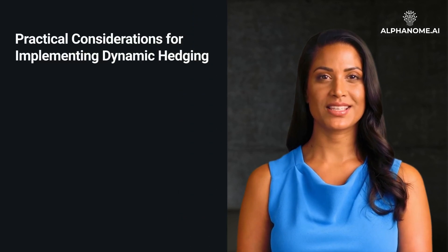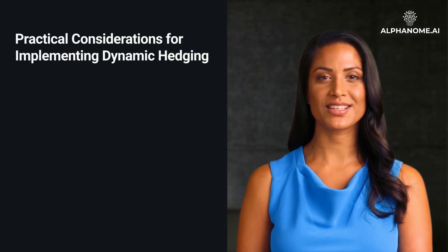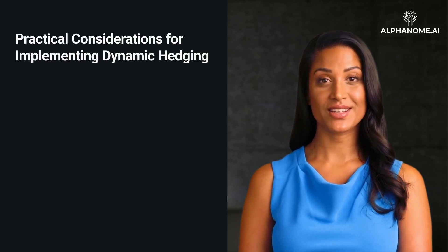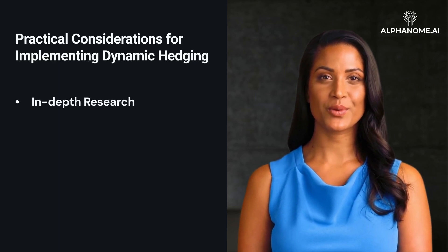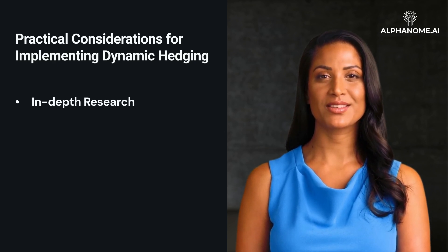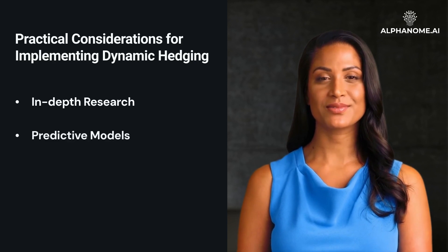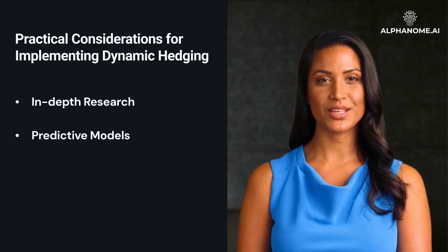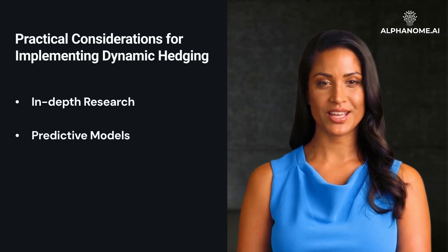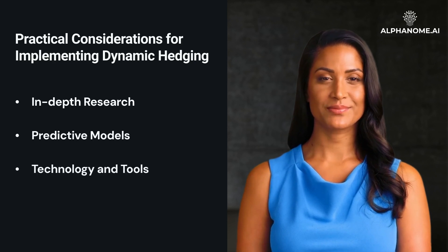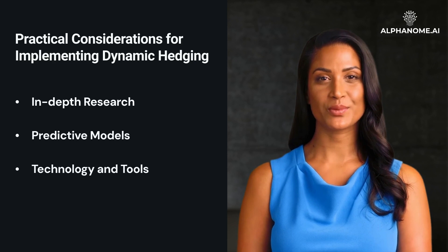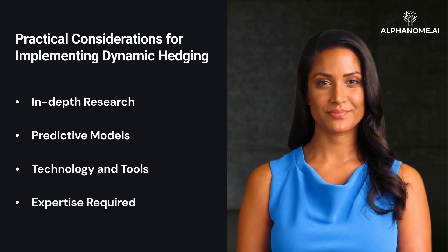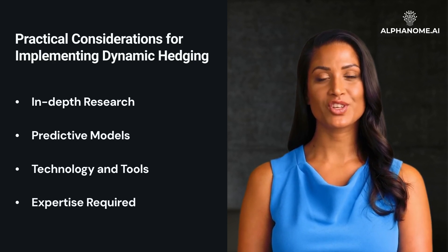Practical Considerations for Implementing Dynamic Hedging. Implementing a dynamic hedging strategy involves several practical considerations. In-depth research: investors need to conduct thorough market research to understand the factors that influence the price movements of their investments. Predictive models: utilizing statistical and financial models to predict market trends can be beneficial in determining when and how to adjust hedges. Technology and tools: sophisticated software and tools are often required to monitor market conditions in real-time and to execute trades quickly. Expertise required: investors should have a strong background in financial derivatives and risk management, or consult with professionals who specialize in these areas.